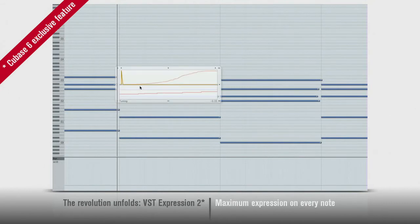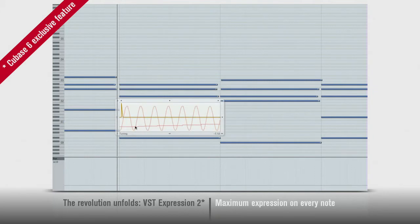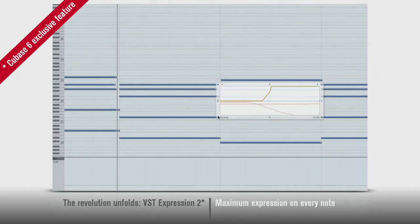You can now see and edit MIDI controller data note by note. Select a MIDI note and Cubase 6 shows you all the associated controllers: velocity, pitch bend, modulation, you name it. And you can edit each one graphically and independently.